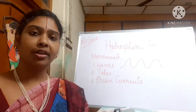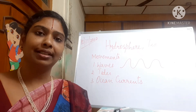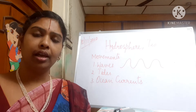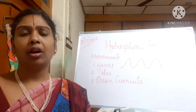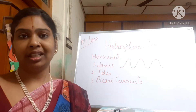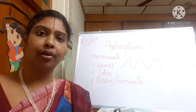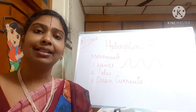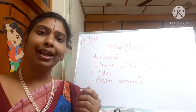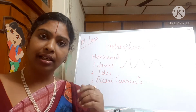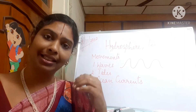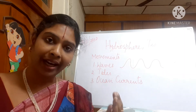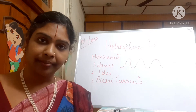Tides are caused by the gravitational forces of the sun, moon, and even the rotation of the earth. Most objects on the earth are subjected to this kind of tidal influence. Since the distance of the moon is less, the moon causes more tidal influence than the sun.